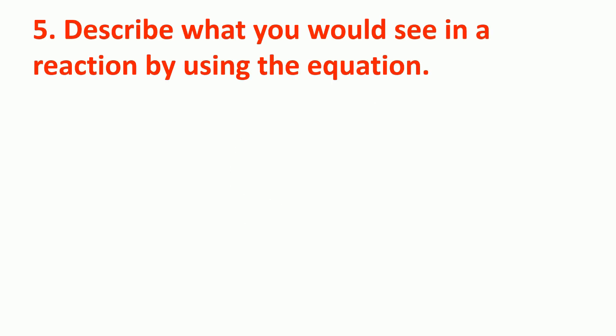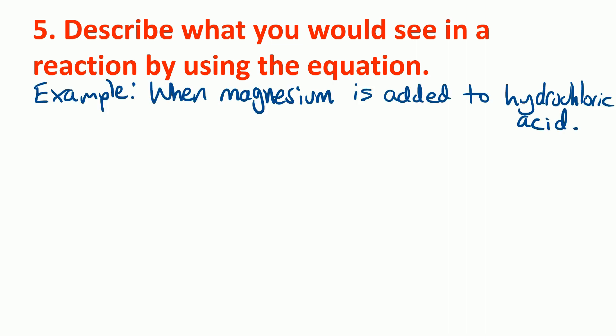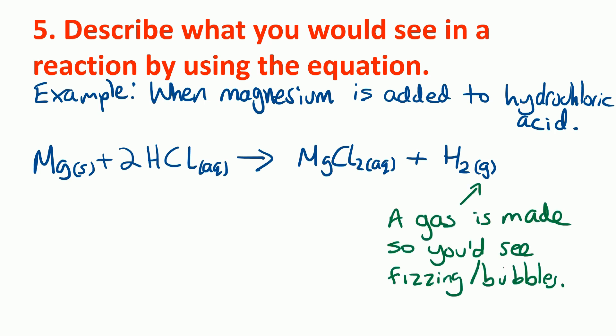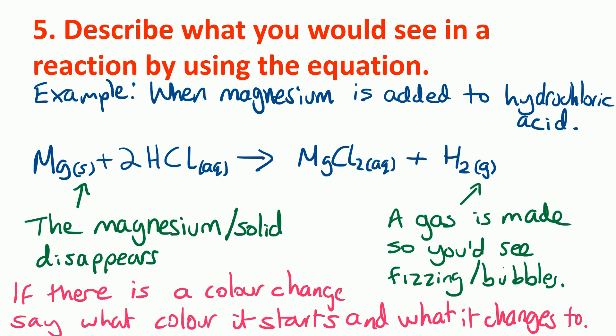At number 5 in the chart, we have describe what you would see in a reaction by using the equation. So for example, the exam question might say when magnesium is added to hydrochloric acid, what would you see? And they'll provide an equation to help you. So the first thing we look at is the state symbols. And on the right hand side where the products are made, we can see that a gas is made. So you'd actually see fizzing or bubbles. On the left hand side, we've got a solid. And there's no solid on the right. We've only got a solution, aq, and a gas, which is shown by the g. So the magnesium or the solid disappears. If there is a colour change involved, you'd have to say what colour it starts off and what colour it changes to. It's not enough just to say there would be some sort of colour change.